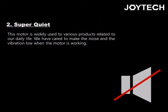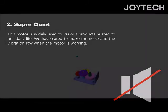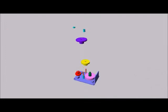The second feature is super quiet and smooth operation. This motor is widely used in products related to daily life. Therefore, we have to make the noise and the vibration low when the motor is working. The combination of gears is set properly and works very well. The sophisticated gear set can make the operating quietly with powerful torque.